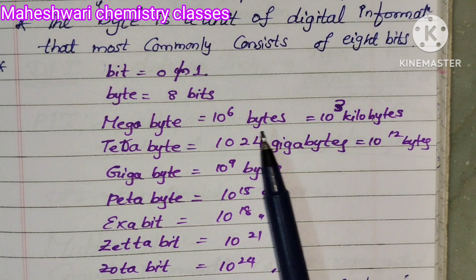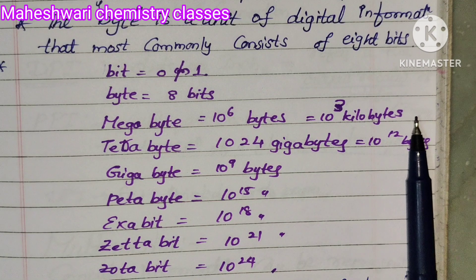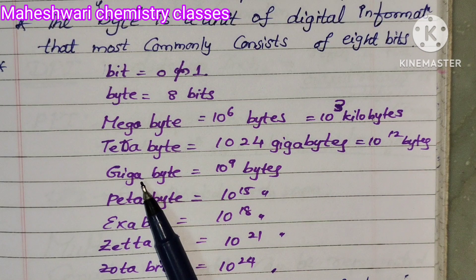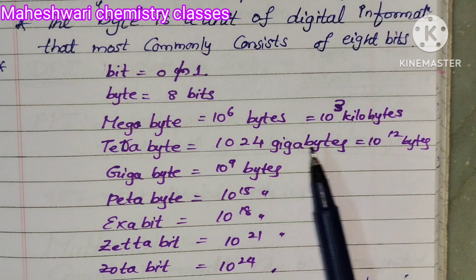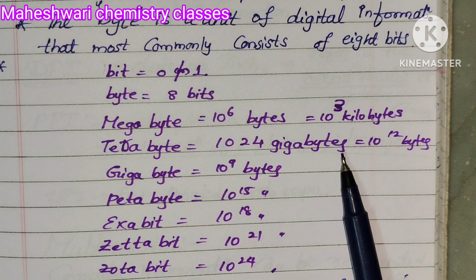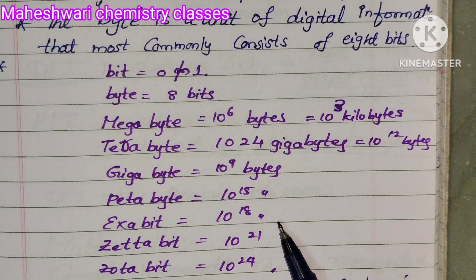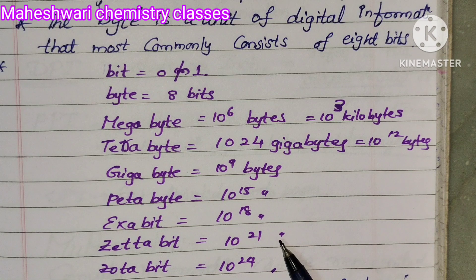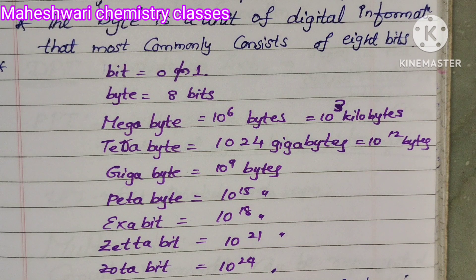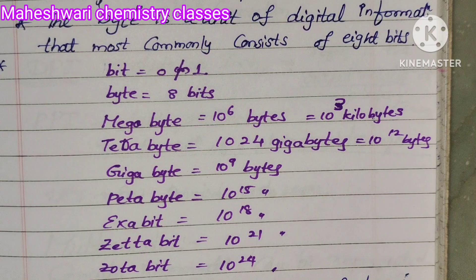Megabyte is 10⁶ bytes (10³ kilobytes). Gigabyte is 10⁹ bytes. Terabyte is 10¹² bytes. 1024 Gigabyte is 10¹⁵ bytes. Exabyte is 10¹⁸ bytes. Zettabyte is 10²¹ bytes. Yottabyte is 10²⁴ bytes.